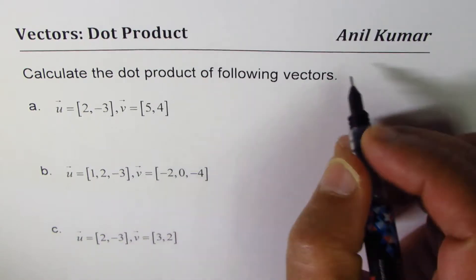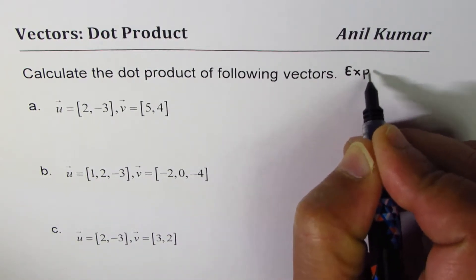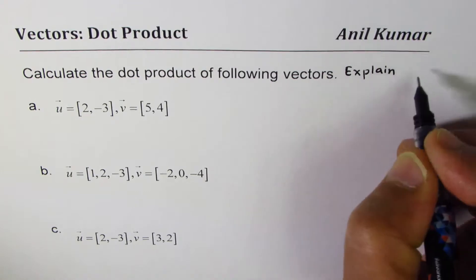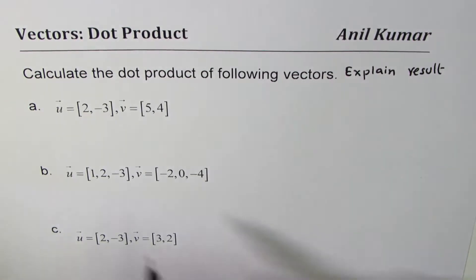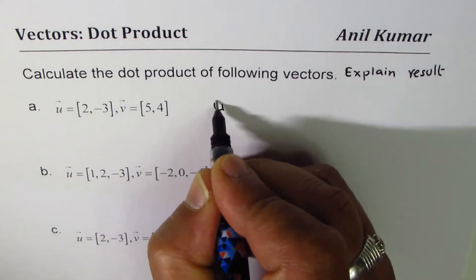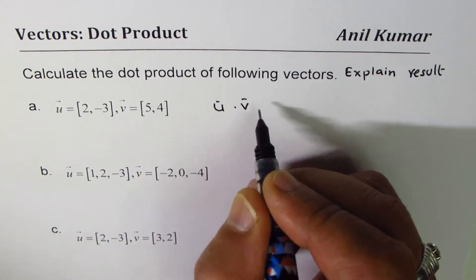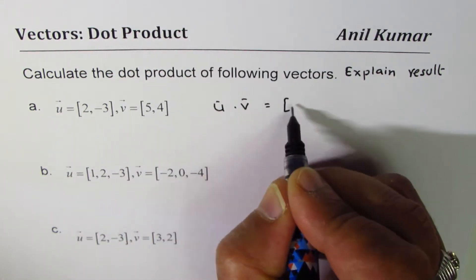I would also like you to explain your results. So it is calculate the dot product of the following vectors and explain results.